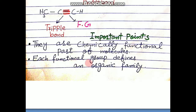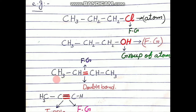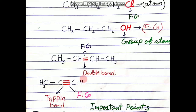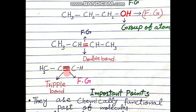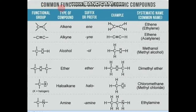Next point: each functional group defines an organic family. For example, if a compound has a chlorine functional group, then that entire compound belongs to the alkyl halide family. If it has a hydroxyl functional group, then that entire compound belongs to the alcohol family. In this way, functional groups define different families of organic compounds.